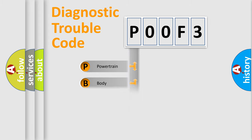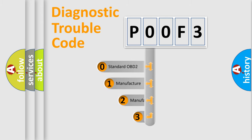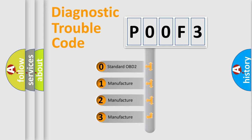Powertrain, Body, Chassis, Network. This distribution is defined in the first character code. If the second character is expressed as zero, it is a standardized error. In the case of numbers 1, 2, or 3, it is a manufacturer-specific error.